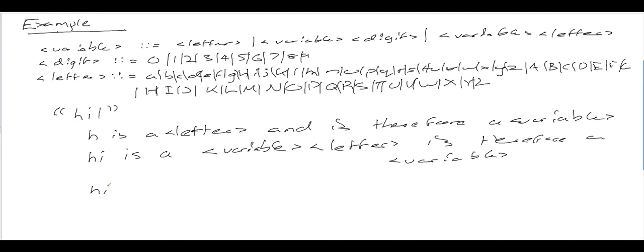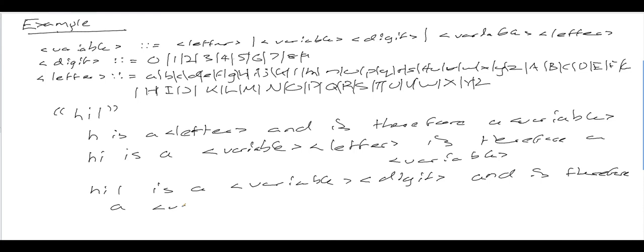Finally, HI1 is a variable because HI is a variable and 1 is a digit — found in the digit production rule — so HI1 is a variable and a digit and is therefore a variable. What we've done there is something called parsing. Parsing is the process of working out whether a statement is valid — in this case, whether HI1 is a valid variable name. Usually a computer would do that parsing to work out, for example, if some code you've written in Python is valid Python code.